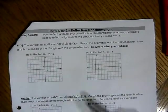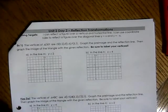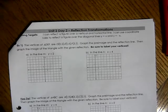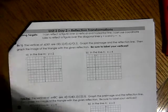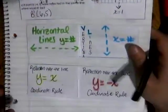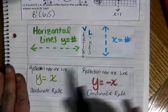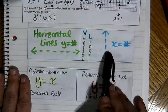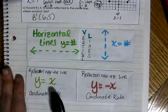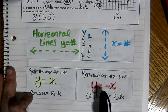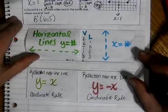One of the things that you will need to reference in your notebook is our transformation rules for reflections. There are four different types of reflections we are going to be talking about: reflections in horizontal and vertical lines, and reflections over the line y equals x and y equals negative x.